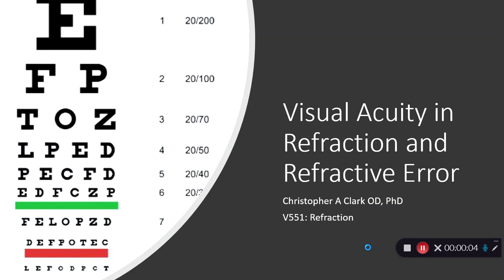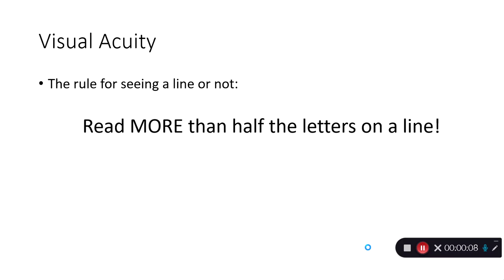This is visual acuity in refraction and refractive error for V551 Refraction. Visual acuity has a rule. The rule or criteria for determining if somebody can read a series of letters or what their acuity is, is they need to be able to read more than half the letters on a line.